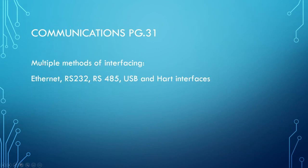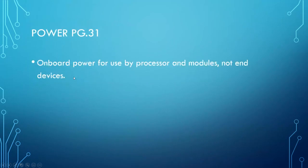For communications, there are many interface options including Ethernet, RS-232, RS-485, USB, and HART — topics covered more in fourth year. For power, the electronic flow measuring device power is designed for the processor and modules only, not the end devices. If you need to power field devices, a separate power supply is required.